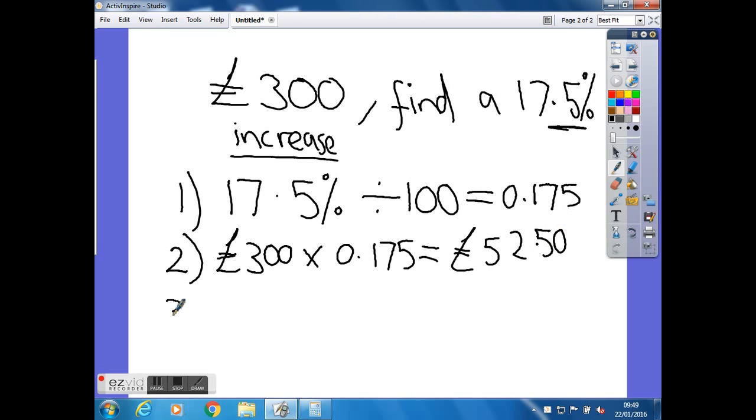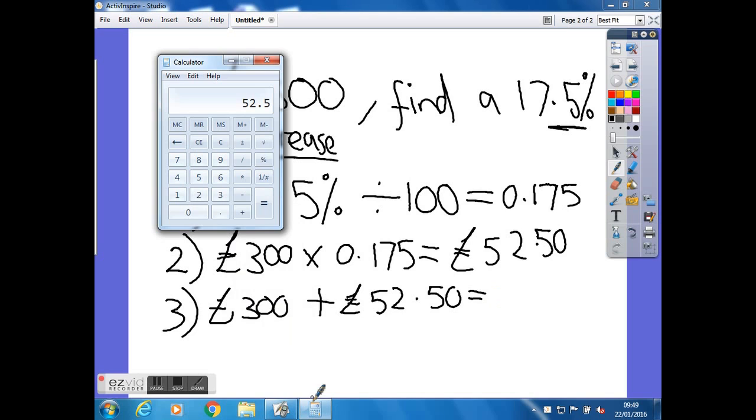And the last bit is going to be slightly different to last time because we're increasing the price. So this time we're going to have to do 300 plus, instead of minus, the £52.50 that we just found. And that will give us an answer of 300 plus £52.50, so £352.50.